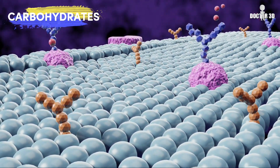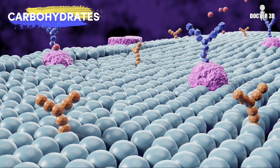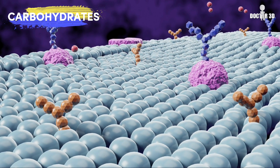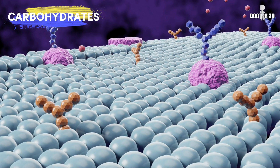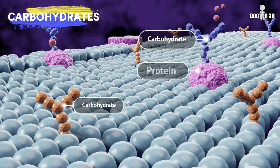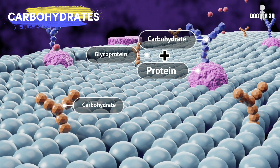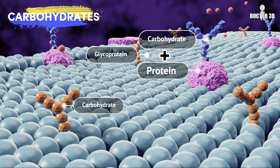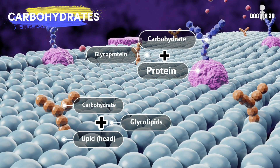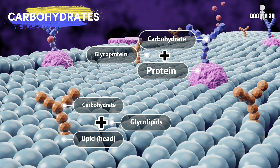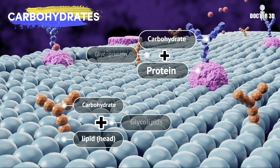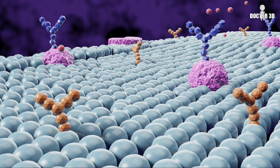Carbohydrates are also a major component of the plasma membrane. They are found on the outside of the cells and are bound to either proteins, forming glycoproteins, or lipids, forming glycolipids. Carbohydrates participate in cell recognition, adhesion, and cell-to-cell signaling.